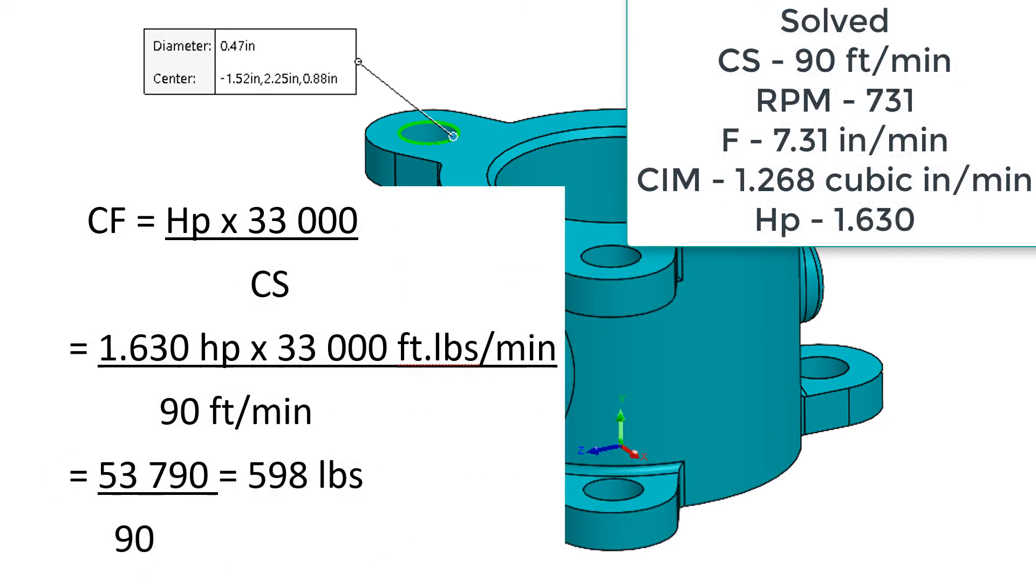Now that we know our horsepower we can solve for the cutting force. If we take 1.63 times 33,000 and divide by the cutting speed of 90 we get a cutting force of 598 pounds to drill the 0.47 hole.